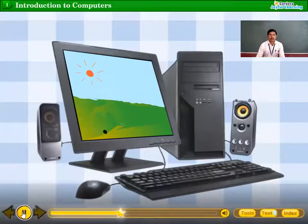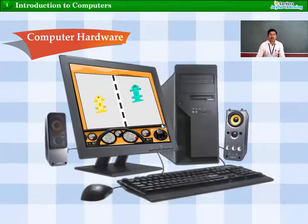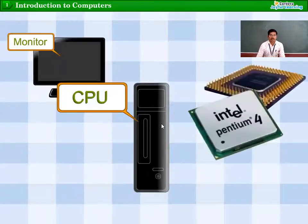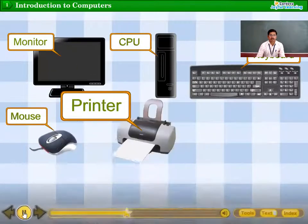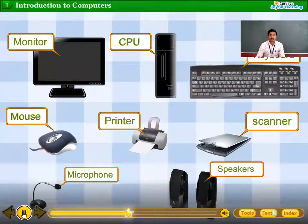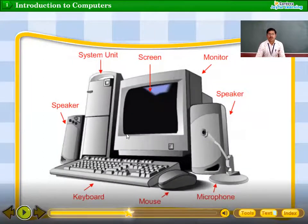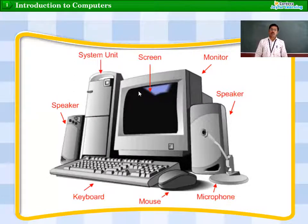Let us learn about computer hardware and software in detail. Computer hardware refers to the parts of a computer system that you can touch and feel, such as monitor, CPU, keyboard, mouse, printer, scanner, microphone, and speakers. All these parts — monitor, speakers, microphone, mouse, keyboard, CPU box — are called hardware.